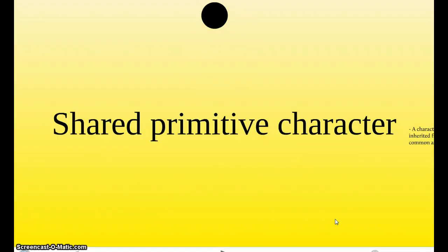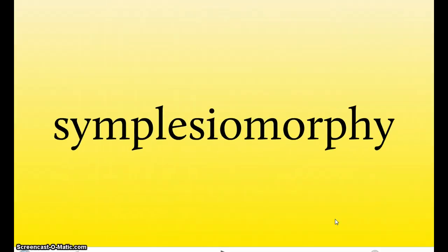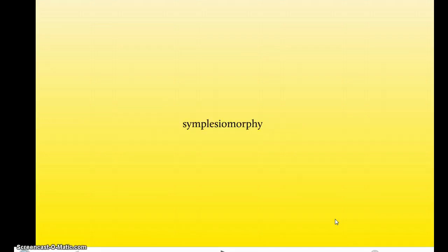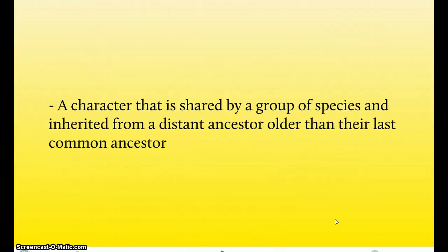For shared primitive characters, they're also called symplesiomorphies. A shared primitive character is a character that is shared by a group of species and inherited from a distant ancestor older than their last common ancestor.